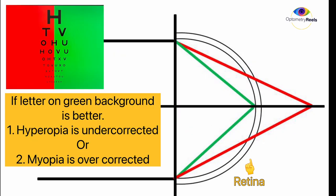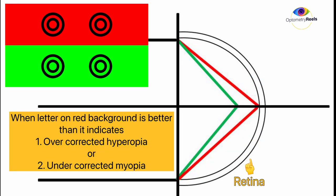If your patient says that letters on the green background are better, it means you have undercorrected hyperopia or overcorrected myopia. When your patient says that letters on the red background are better, it shows that hyperopia is overcorrected, or if the patient is myopic, then myopia is undercorrected.